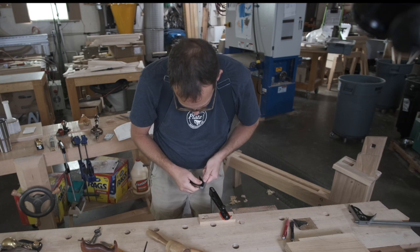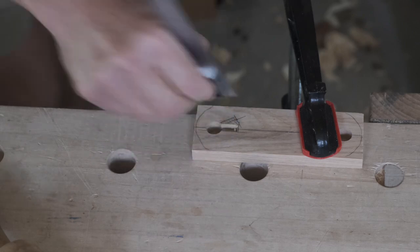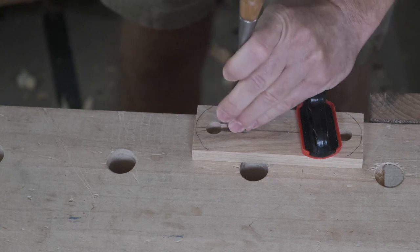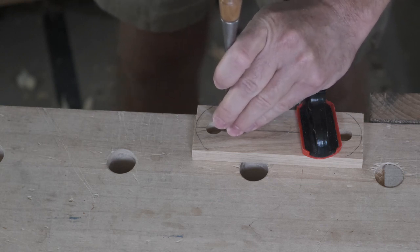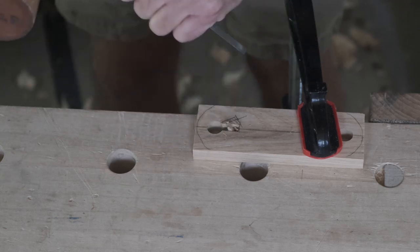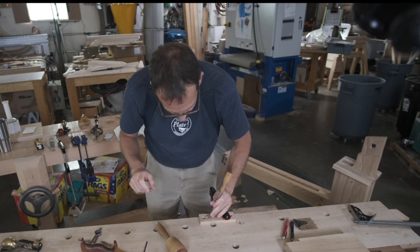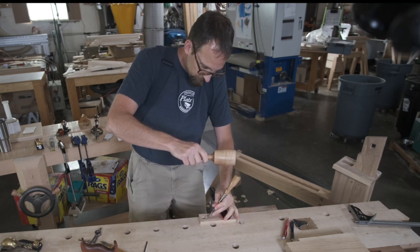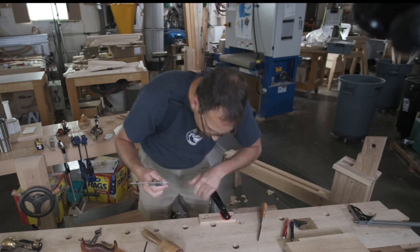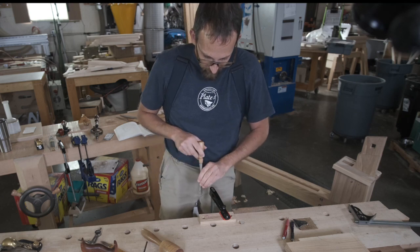I'm going to set my square to the depth I want so I can check for that as I go. I've got about a sixteenth left. If you're going to miss, you want to miss by going a little bit deep. This is really just a clearance opening. I'm deep enough here. Before I clean up all these edges, I want to go ahead and excavate this side.